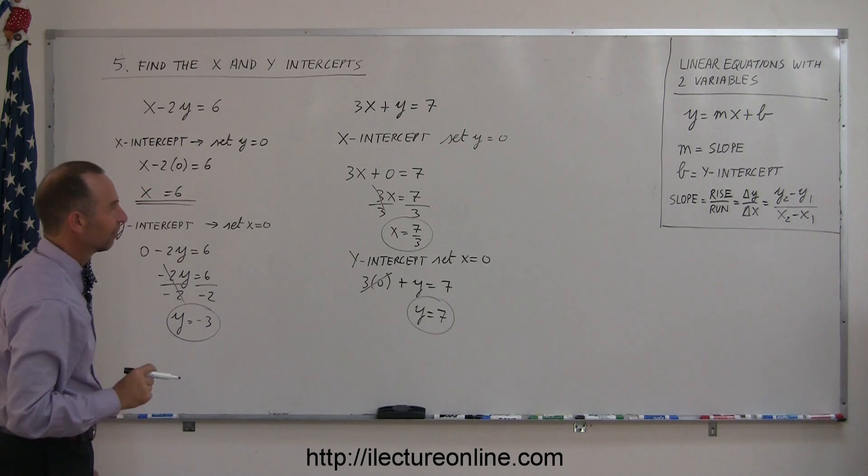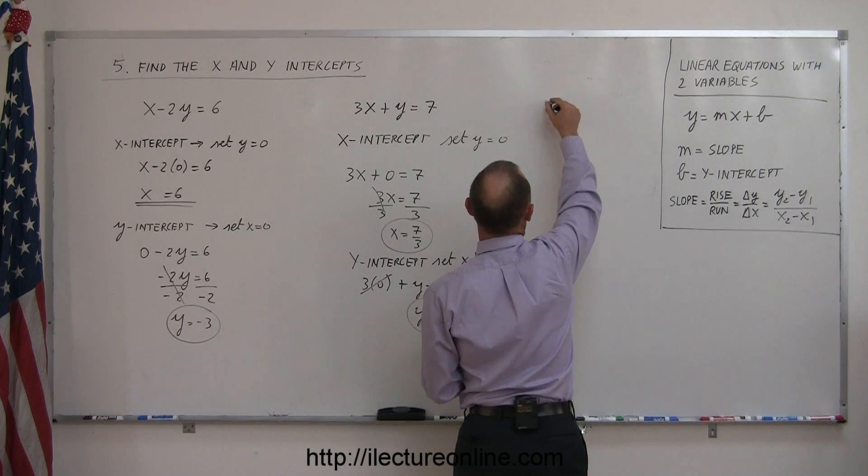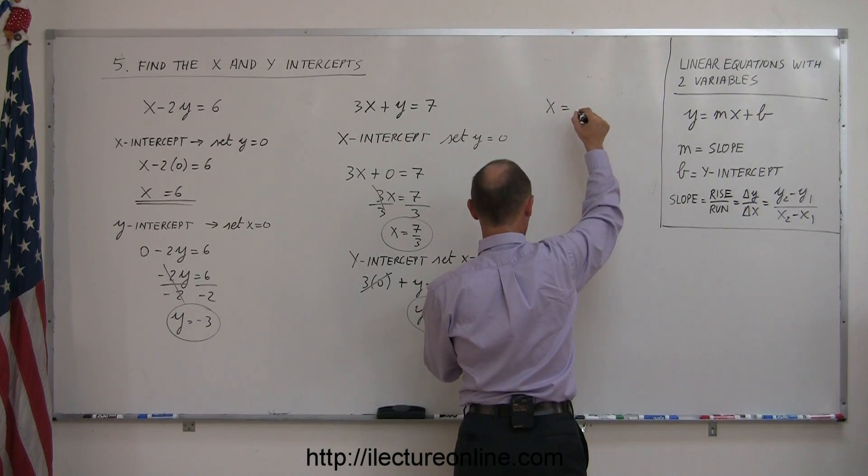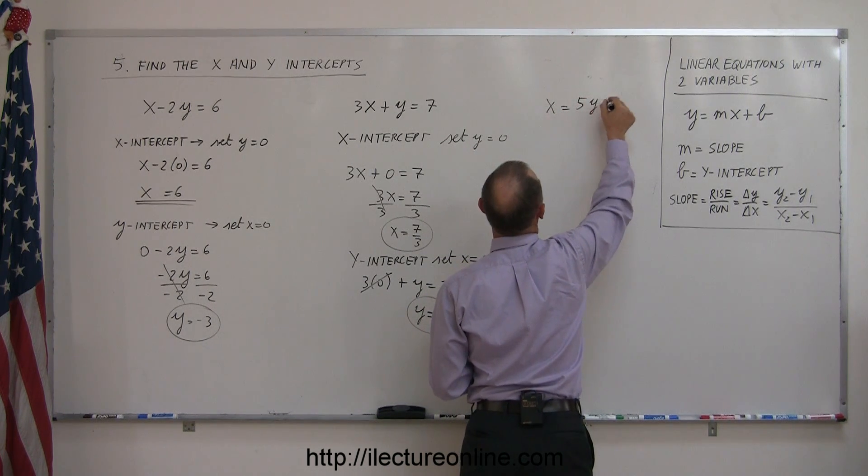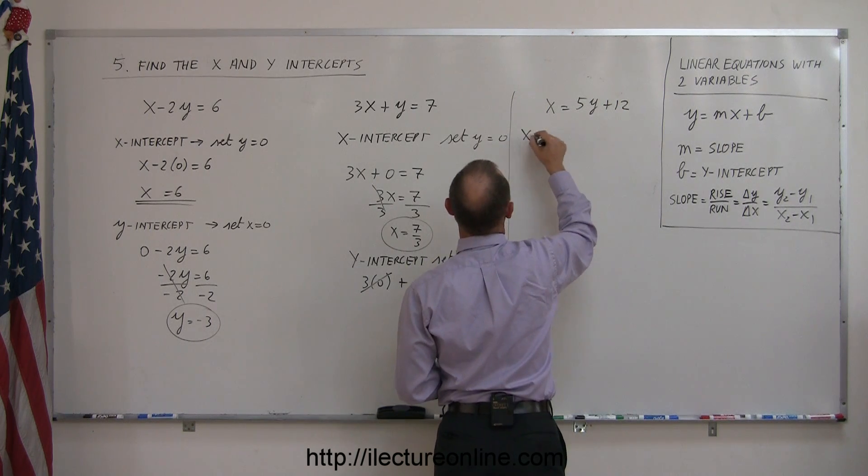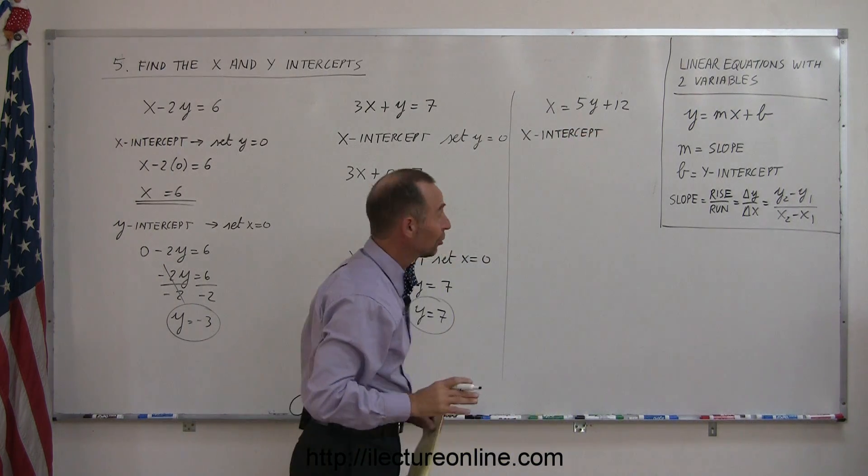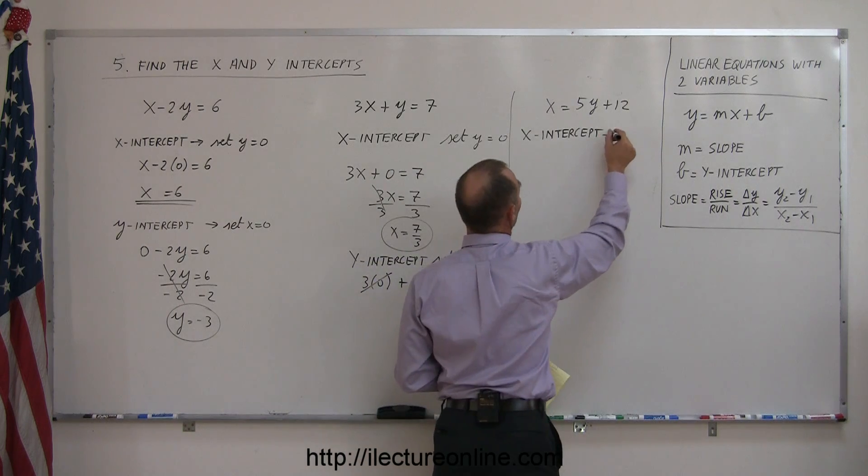One more for good measure. x equals 5y plus 12. Again, we want to find the x-intercept to start off with. Remember, to find the x-intercept, you set the y equal to zero.